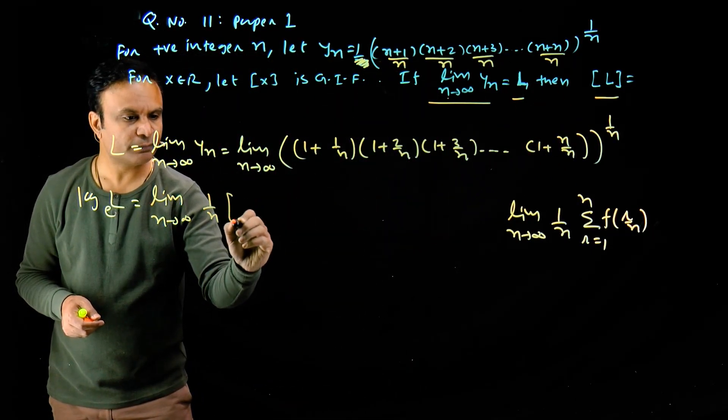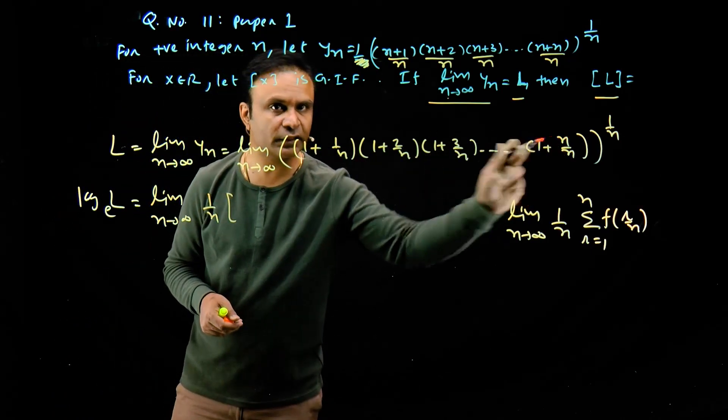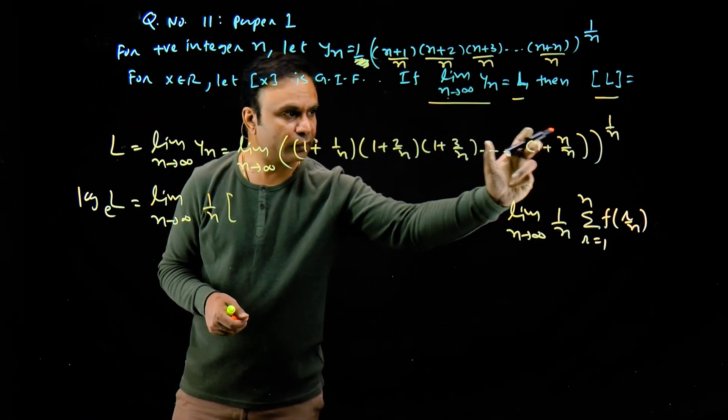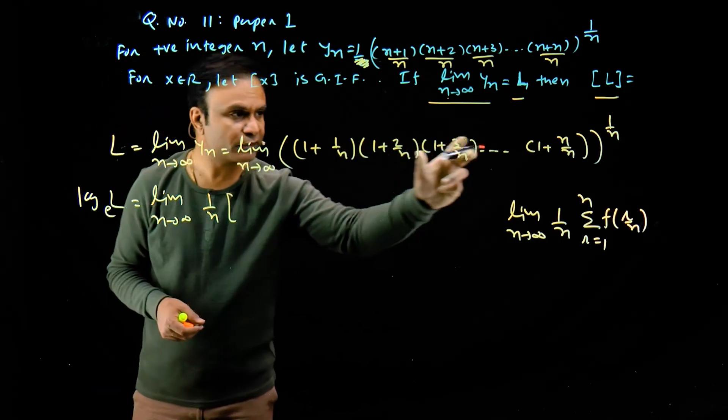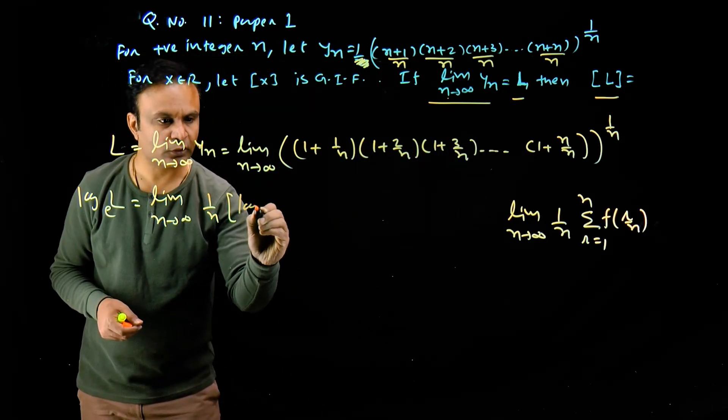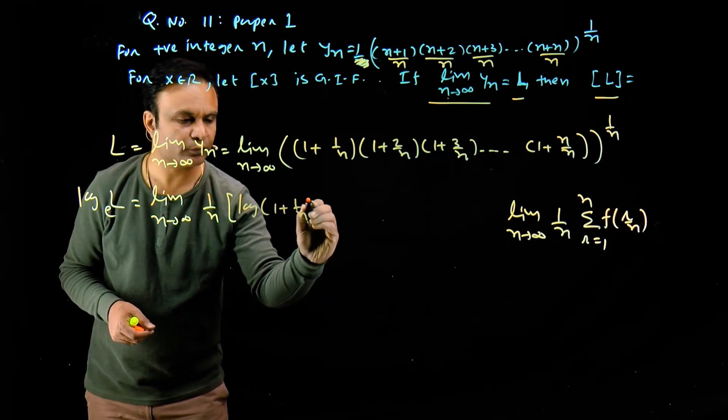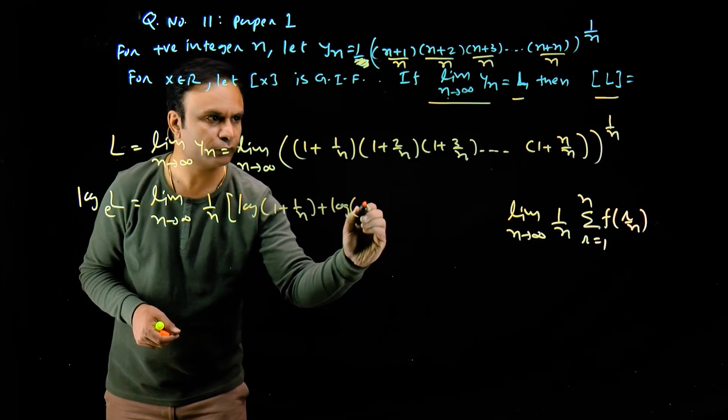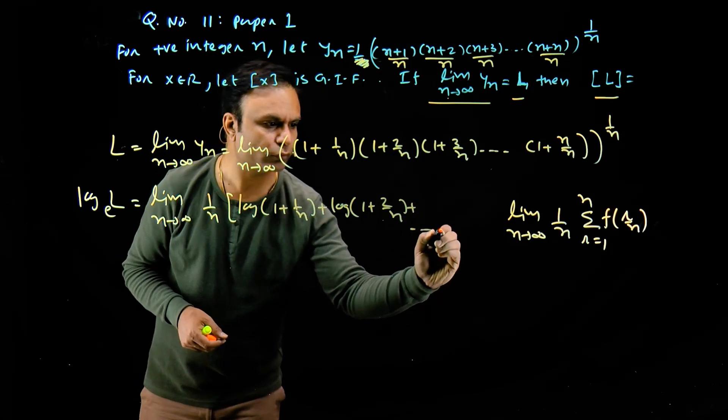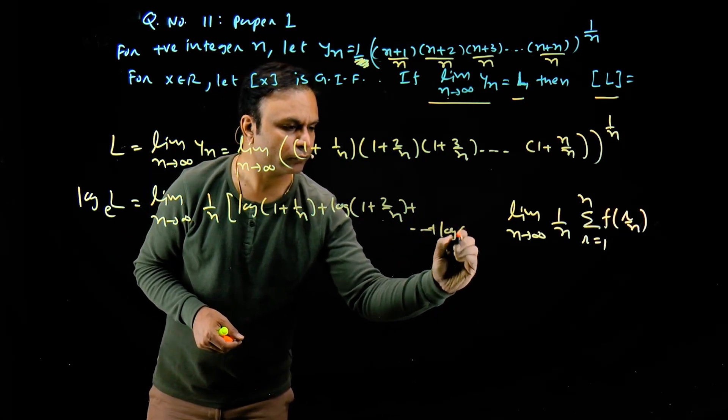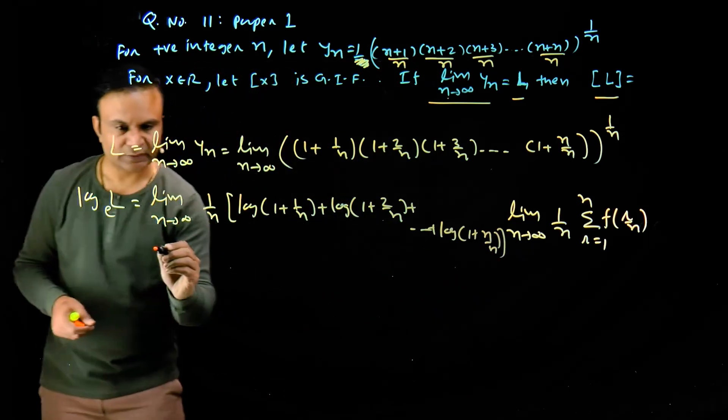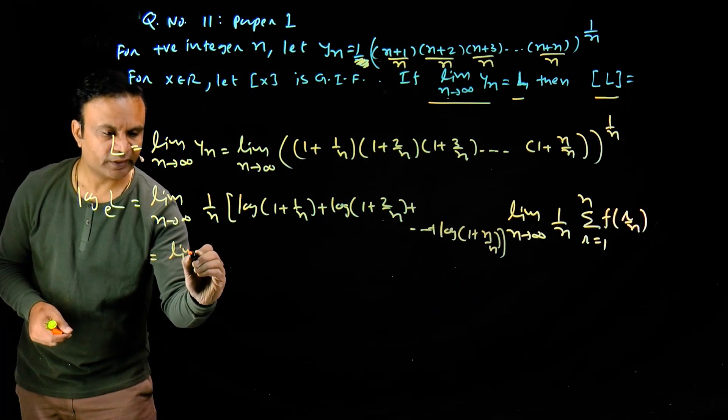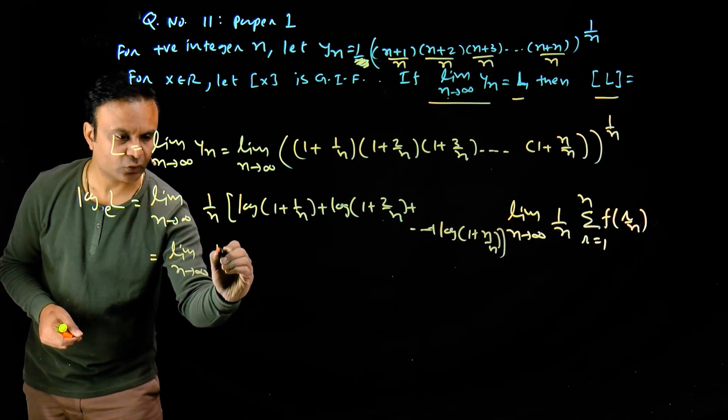This equals limit n tends to infinity, and from logarithm properties 1 upon n comes out, so 1 upon n multiply by logarithm of this expression. When we apply log to all of these, the expression becomes log of (1 + 1/n) plus log of (1 + 2/n) up to log of (1 + n/n).